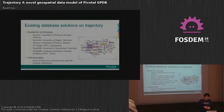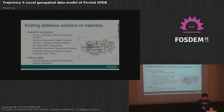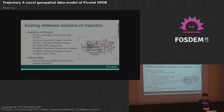Looking at existing databases, many researchers have developed prototypes for trajectory, but none of them are integrated into a general-purpose corporate database. Users don't want to use two separate databases — one general database like Oracle and another prototype. So a good idea is to develop trajectory as a component of a general-purpose database.